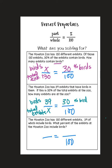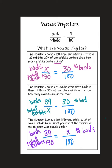Hint: if you went and solved the first one, you would get 39. Now let's look at this next one. The Houston Zoo has 130 different exhibits, 39 of which include birds. What percent of the exhibits at the Houston Zoo include birds? I'm talking about what percent include birds — so this is the percent of birds, which means over here should be the part that are birds out of the total exhibits. There are 130 total exhibits and 39 of them are birds, and I want to know the percent. So I had the same problem, but in each one I was solving for a different thing: in the first one I was solving for the part, in the second one the whole, and in the third one the percent.